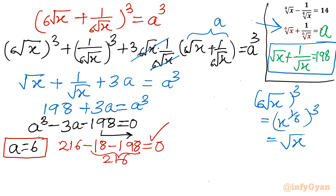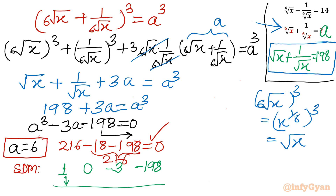Now using synthetic division: the coefficients of the cubic are 1, 0, minus 3, minus 198. With root 6, we get: 1, then 6 times 1 is 6, 0 plus 6 is 6, 6 times 6 is 36, minus 3 plus 36 is 33, 6 times 33 is 198, minus 198 plus 198 is 0. The remaining quadratic factor has coefficients 1, 6, 33, giving us a squared plus 6a plus 33.